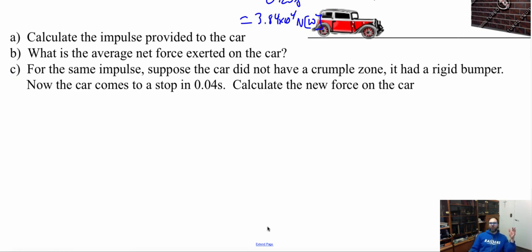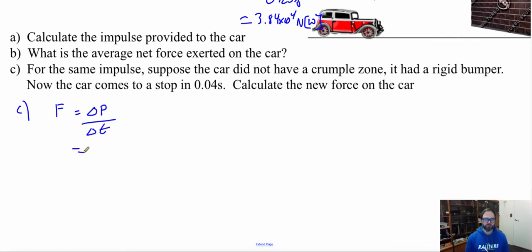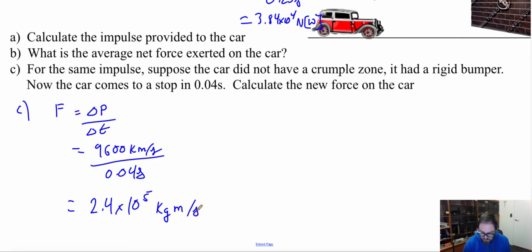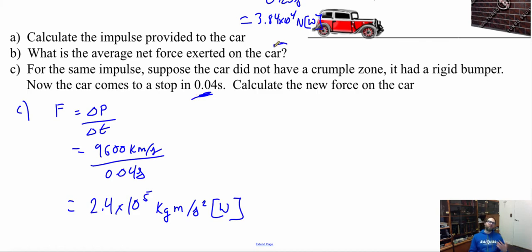Now Part C: for the same impulse, suppose the car did not have a crumple zone and instead had a rigid bumper, so the car comes to a stop in only 0.04 seconds. Force equals impulse divided by change in time. Our change in momentum is still 9600 kilograms meters per second, but our time is now 0.04 seconds. Dividing gives us 2.4 times 10 to the 5 newtons west. So we have quite a bit more force when there's no crumple zone — almost 10 times more force — and that's why we have a crumple zone in a vehicle.